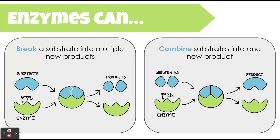Enzymes can somewhat do the inverse of that, where we have multiple substrates. In this example, two substrates join the enzyme at the active site. The enzyme bonds to those two substrates and causes a chemical reaction to join or bond them together, creating one brand new product that is then released from the enzyme.